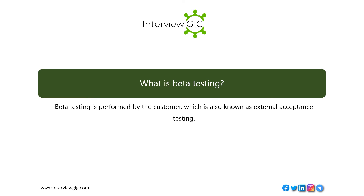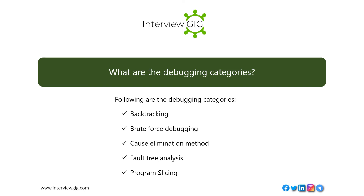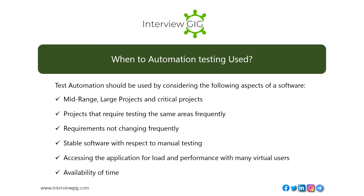What is beta testing? Beta testing is performed by the customer, also known as external acceptance testing. What are the debugging categories? They include backtracking, brute force debugging, cause elimination method, fault tree analysis, and program slicing. When should test automation be used? Test automation should be used for mid-range, large, and critical projects; projects that require testing the same areas frequently; requirements not changing frequently; stable software; load and performance testing with many virtual users; and when there is availability of time.